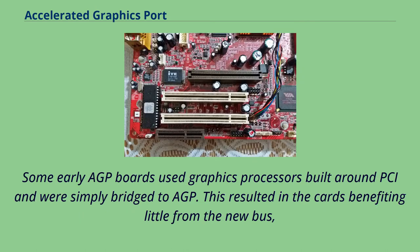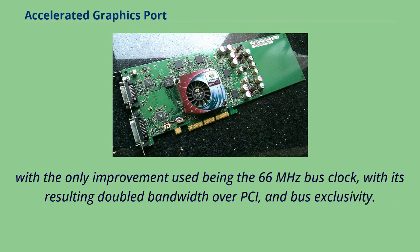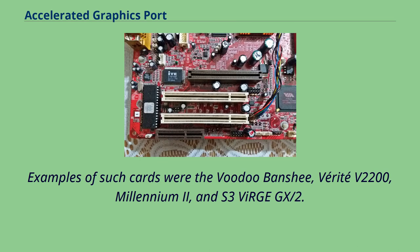Some early AGP boards used graphics processors built around PCI and were simply bridged to AGP. This resulted in the cards benefiting little from the new bus, with the only improvement being the 66 MHz bus clock with its resulting doubled bandwidth over PCI, and bus exclusivity. Examples of such cards were the Voodoo Banshee, Verite V2200, Millennium 2, and S3 ViRGE GX2.